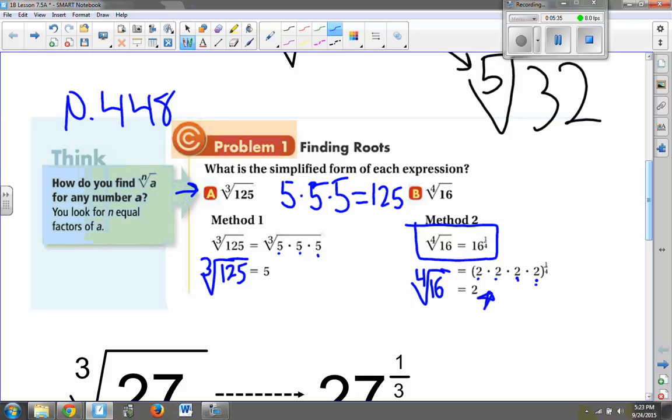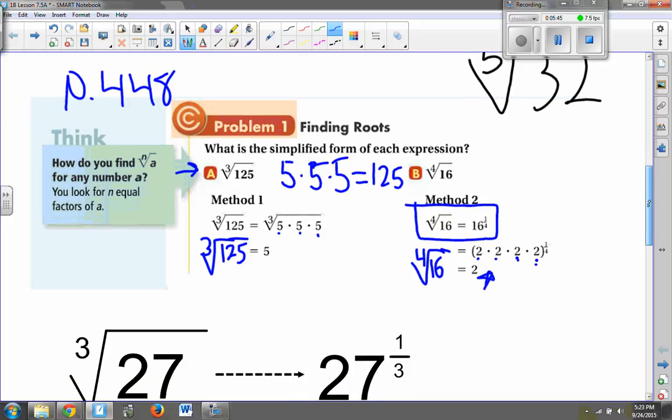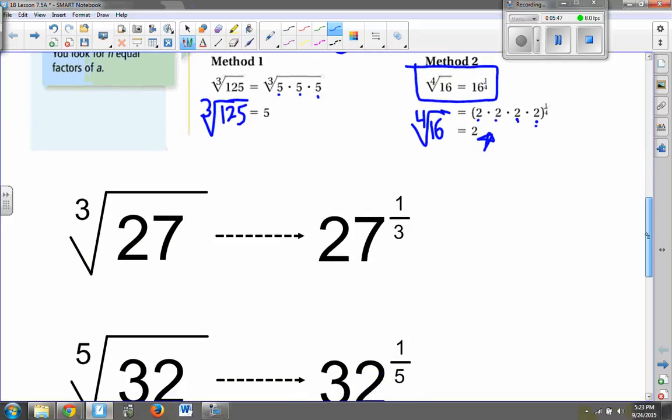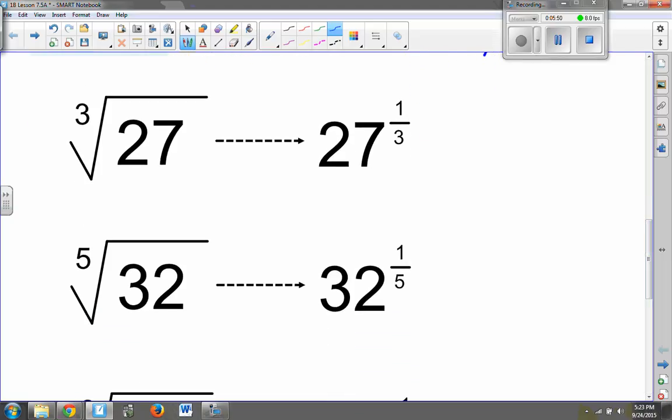Now, on the top of page 449, you will see four problems that you're asked to find the simplified form of. Just as a reinforcement of what we're talking about here, I want to be clear that letter A, which says the third root of 27, is the same as 27 to the one-third power. The same thing in letter B, which says the fifth root of 32, that is the same as 32 to the one-fifth power.